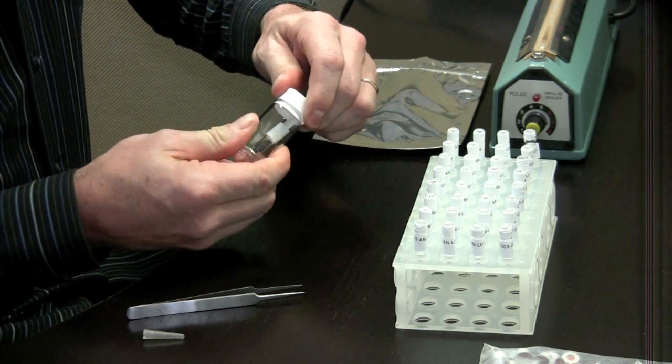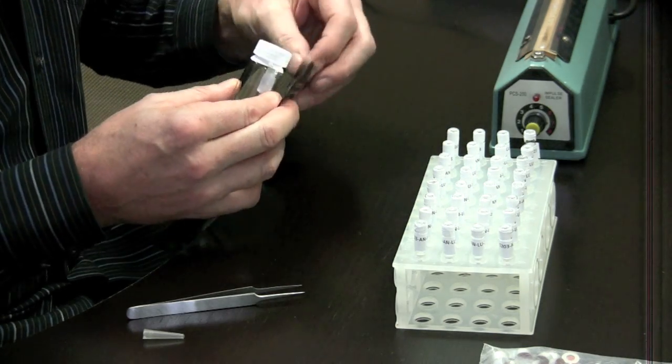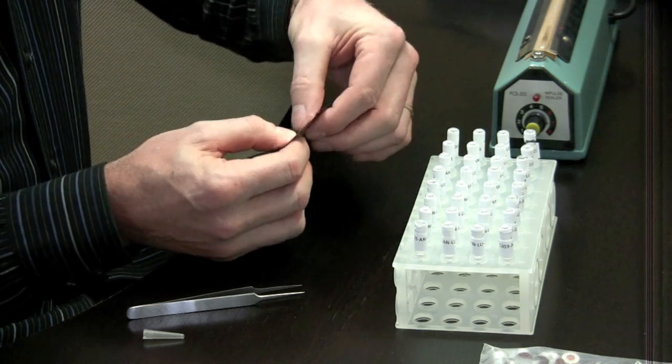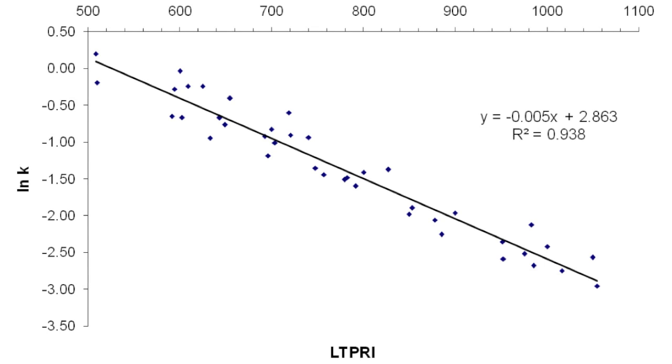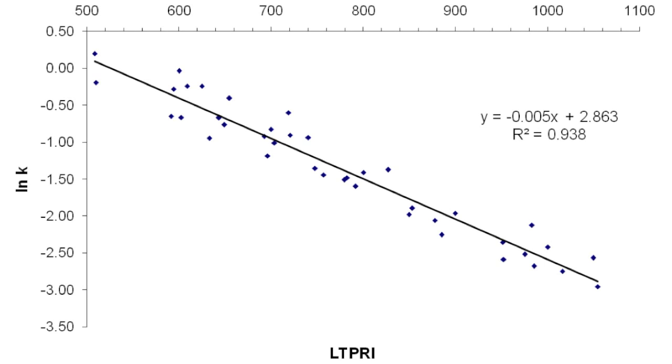But the most interesting feature is that the calibration constants or uptake rates for a wide variety of chemicals can be predicted from the linear temperature program retention indices, as shown in this graph. This allows the sampler to be reasonably accurate even with chemicals for which it has not been specifically calibrated.